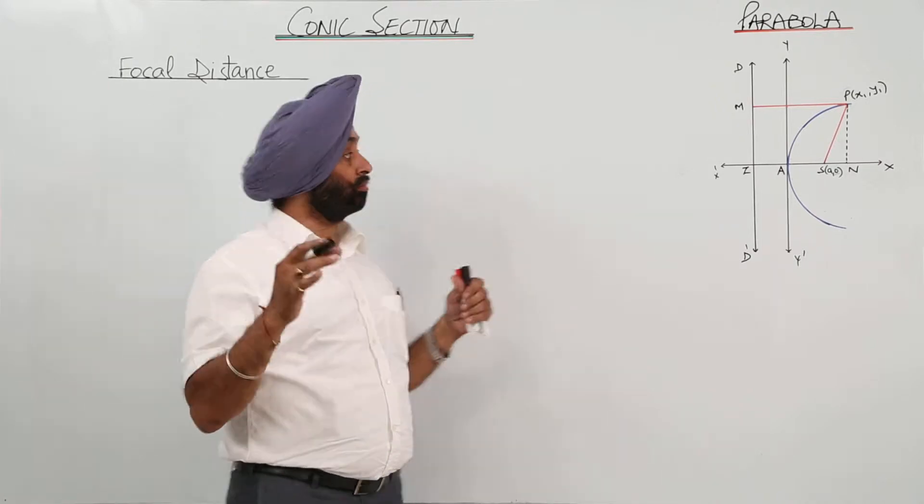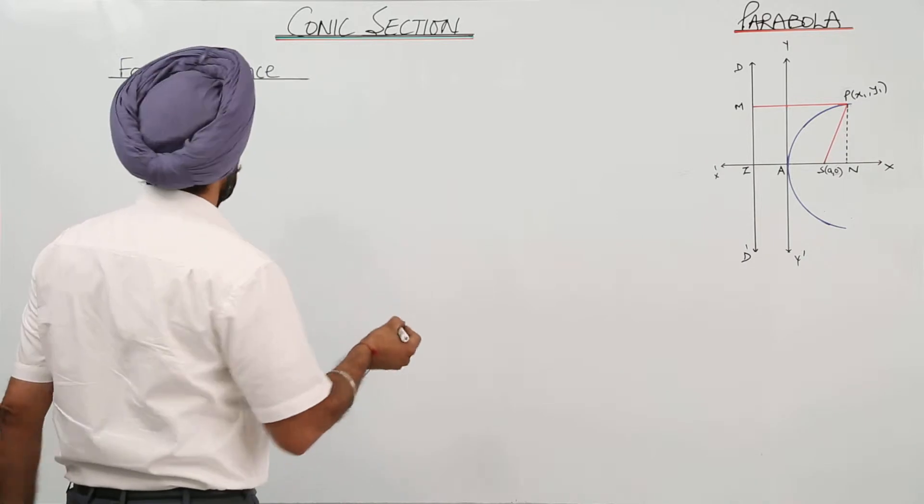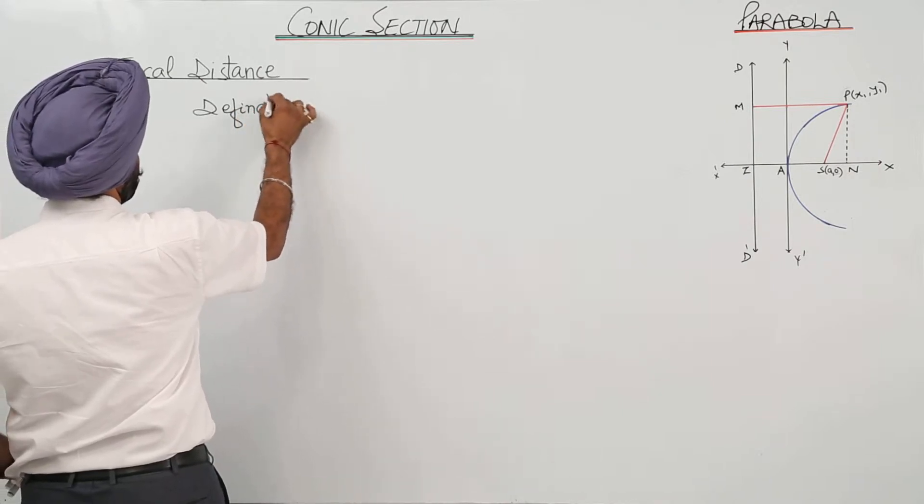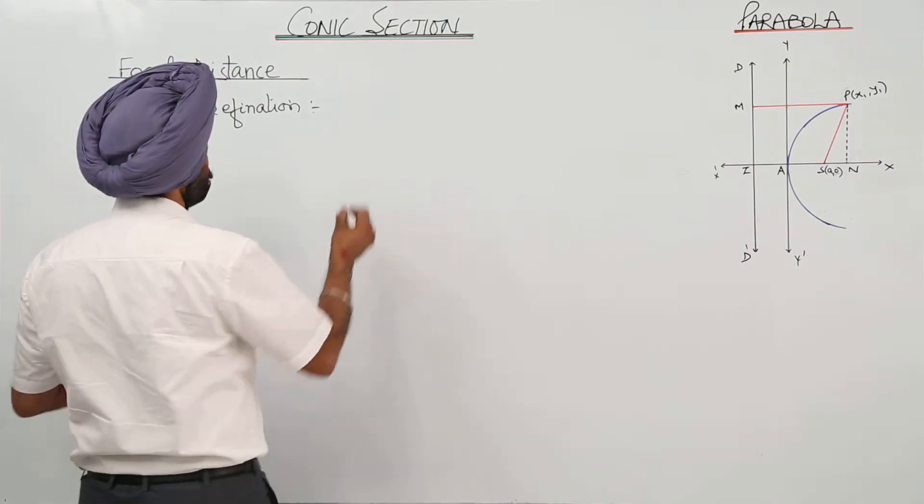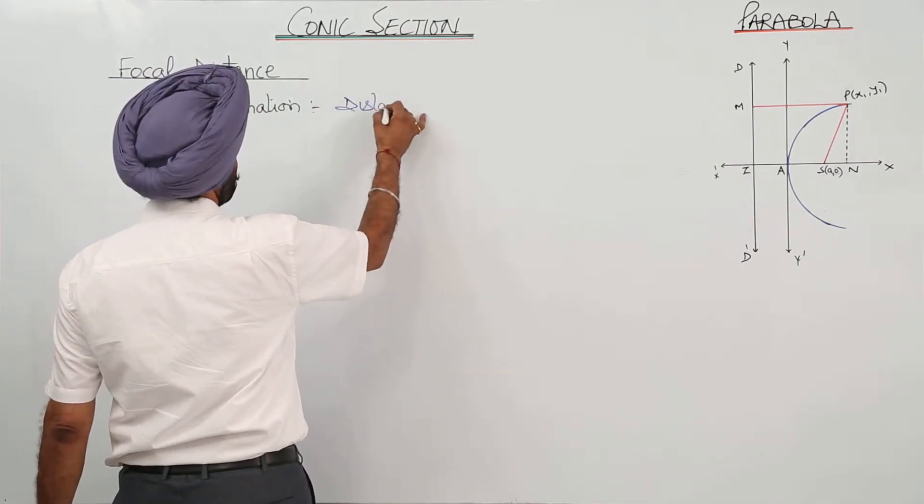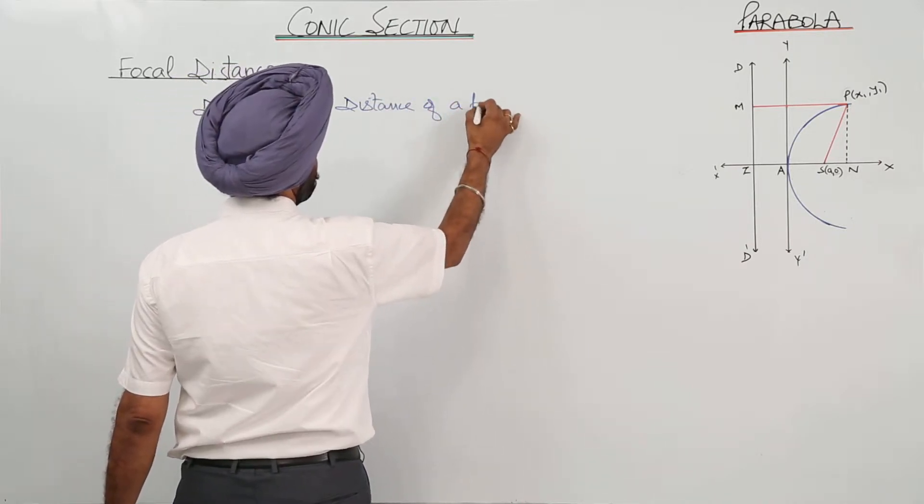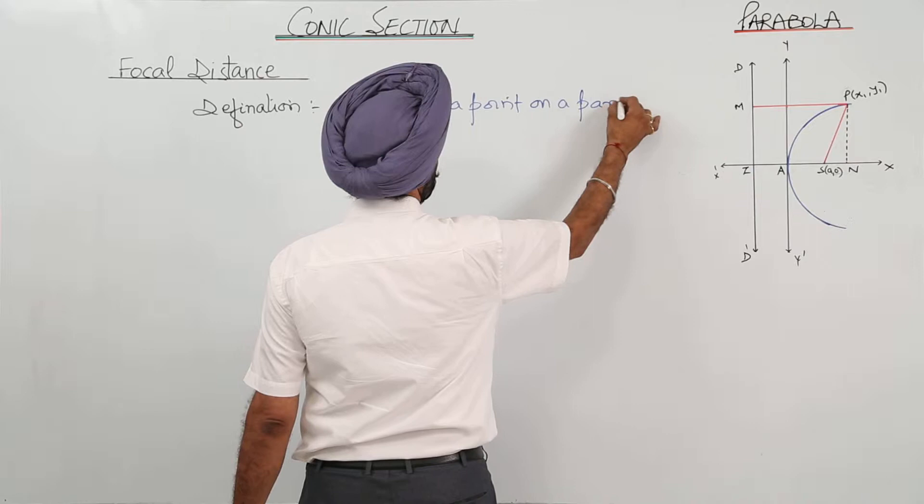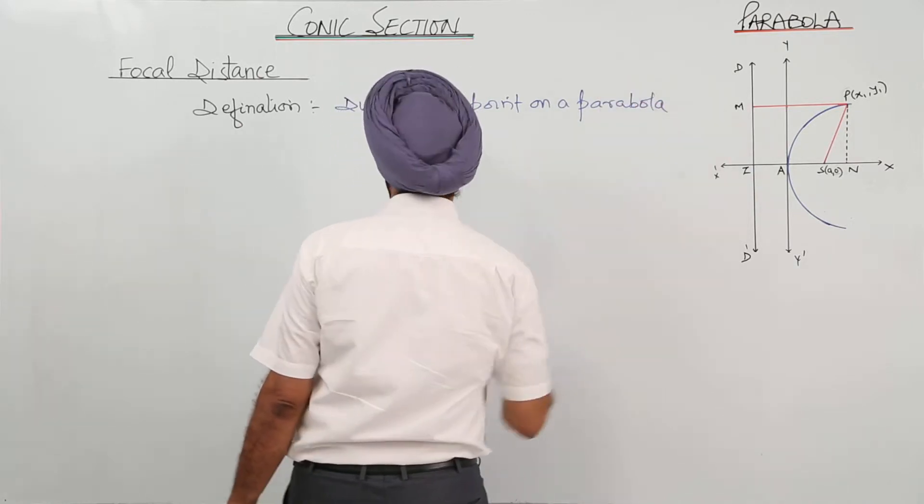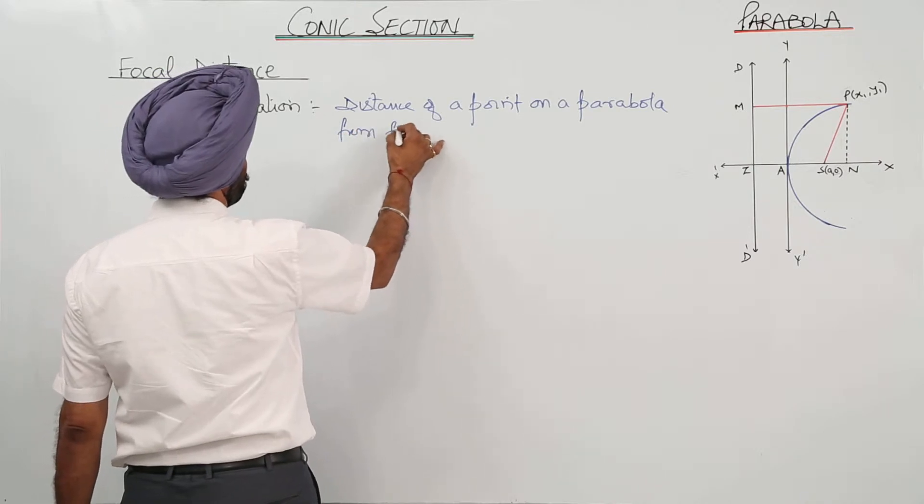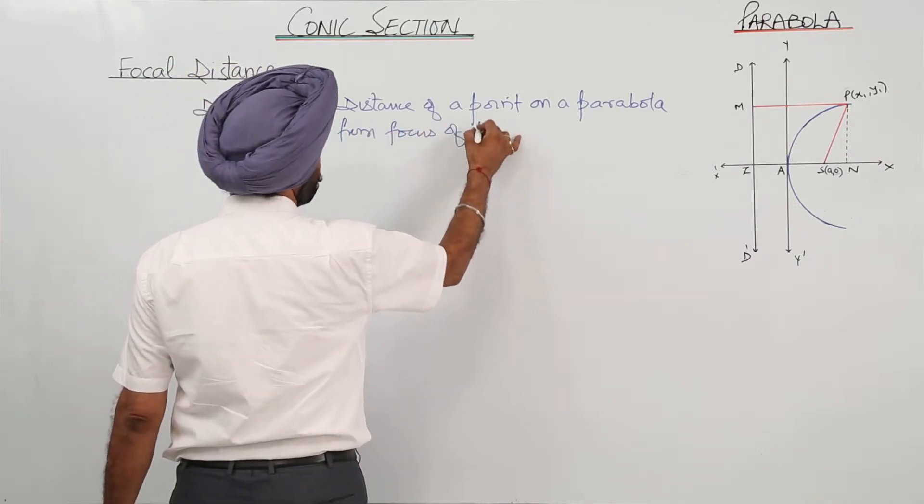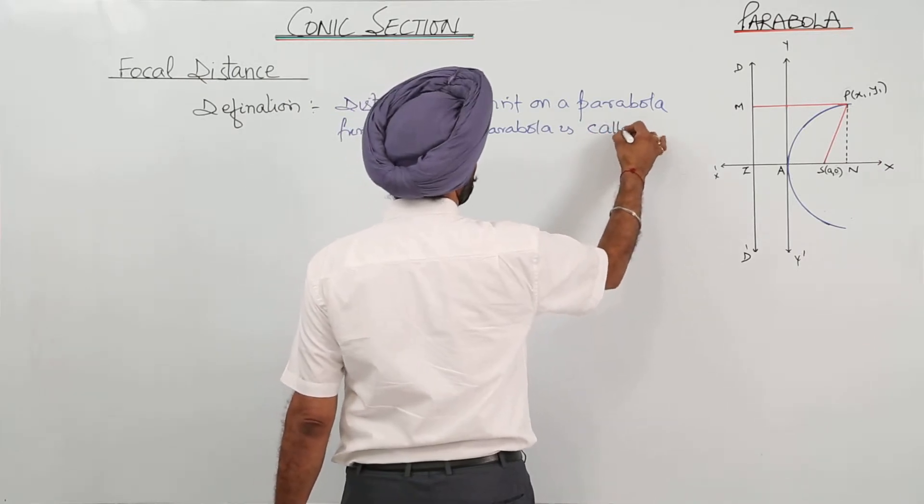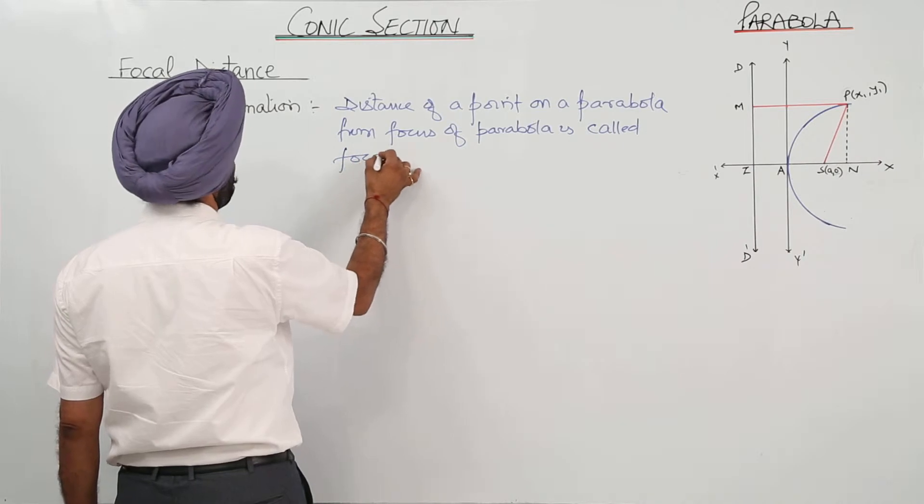Now focal distance. Let me first define it. Definition: distance of a point on a parabola from focus of parabola is called focal distance.